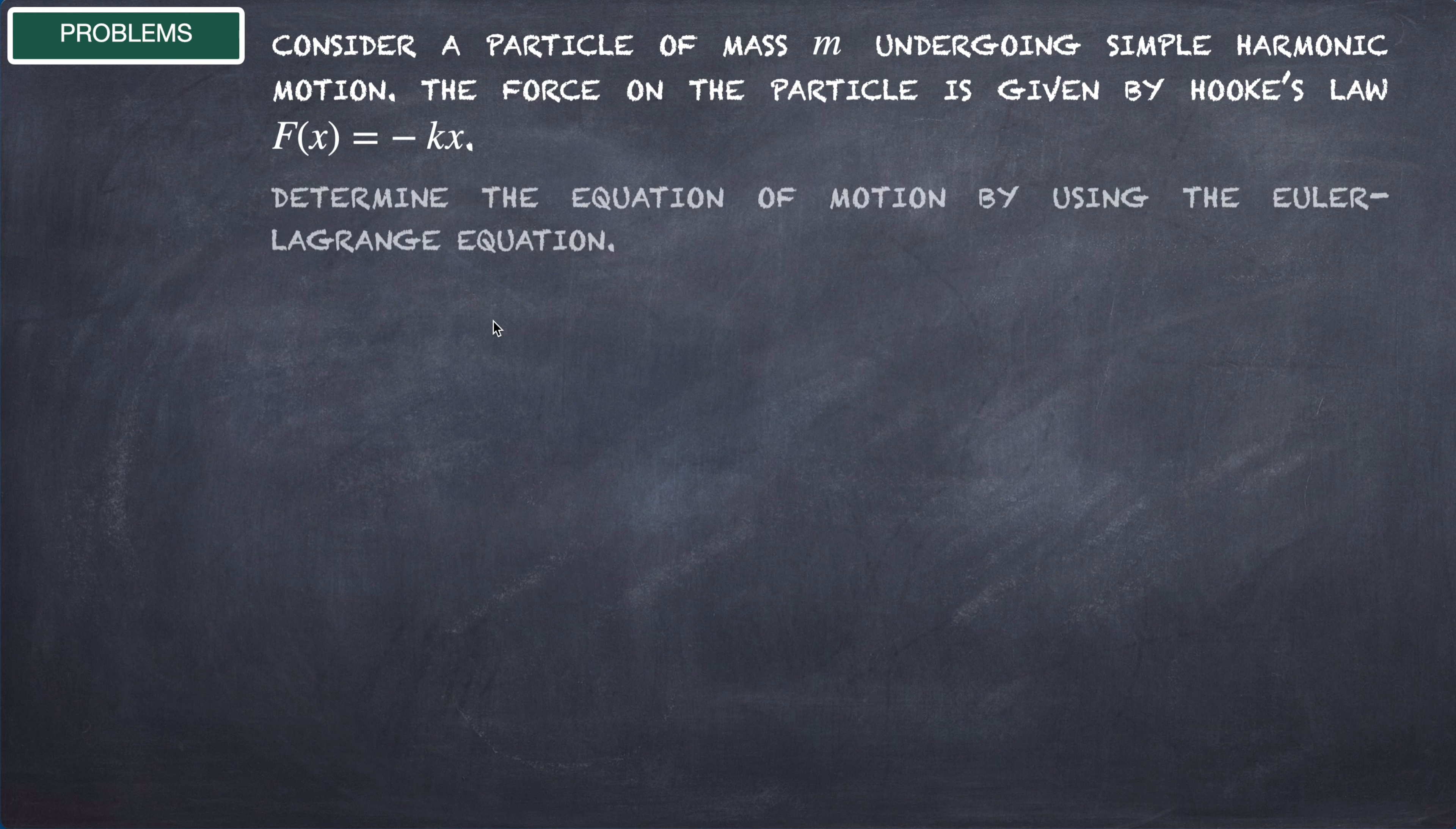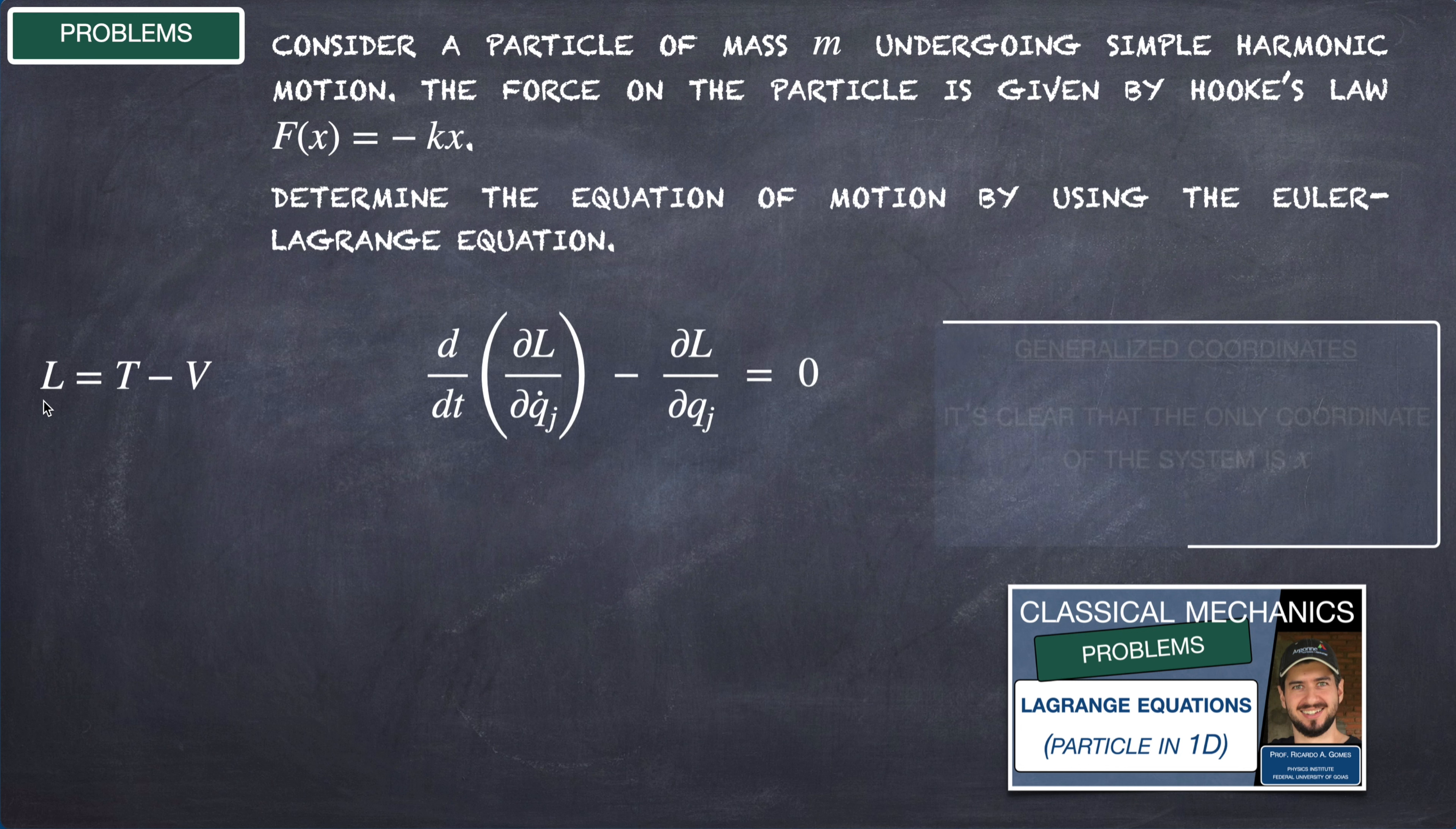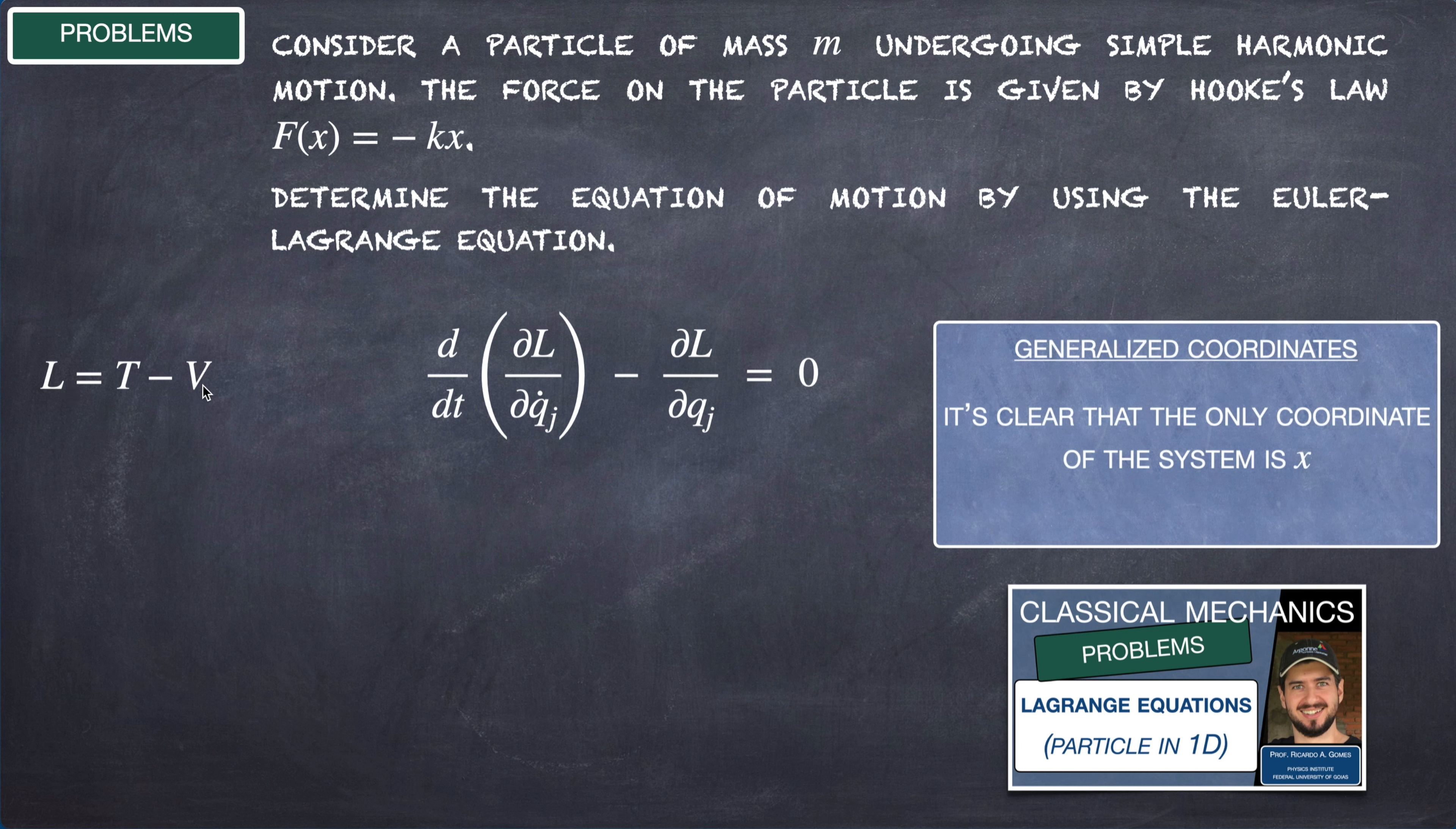Determine the equation of motion by using the Euler-Lagrange equation. We will follow the same procedure we used on the previous problem. For a particle moving in one dimension, we know that the Lagrangian function is the kinetic energy minus the potential energy.